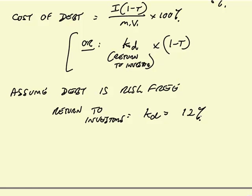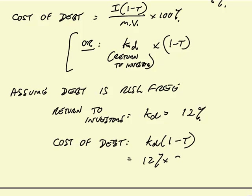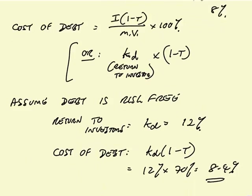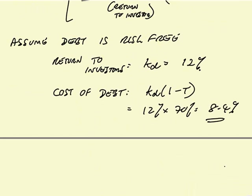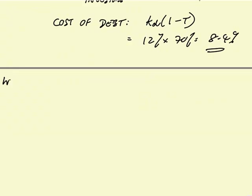But if the investors do want 12%, the company will pay 12%, but the cost to the company, they pay 12% to the investors, but the company gets tax relief at 30%. Well, as I wrote before, it'll be KD times 1 minus T. Or, am I right here? 8.4%. So we know cost of equity 18.8%. We know the cost of debt 8.4%.